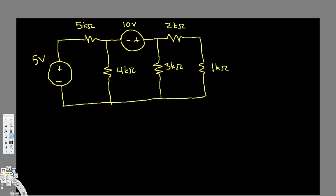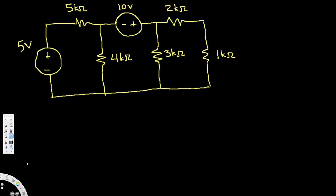In this video we are going to see how to find unknown voltages using nodal analysis. In the nodal analysis method, the first thing we have to do is set up a known voltage — we connect the bottom to ground, so the bottom parts are going to be zero.